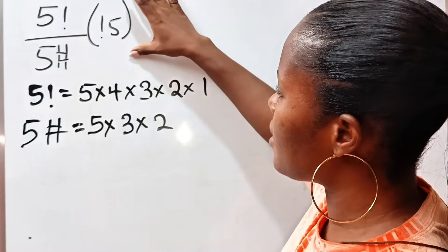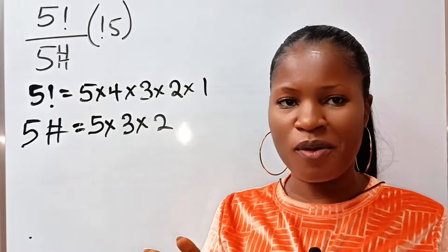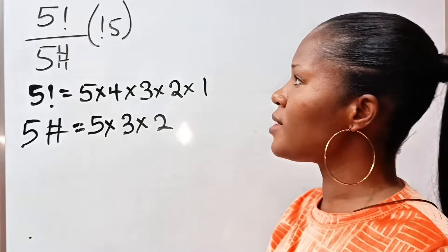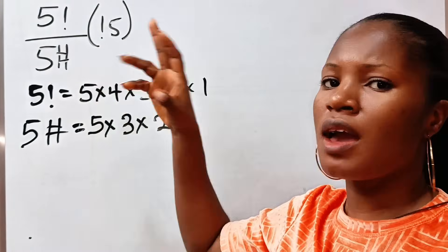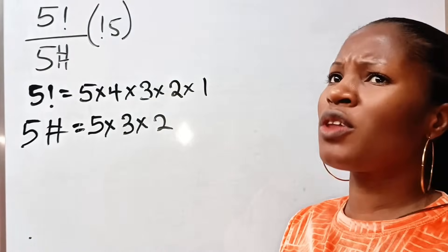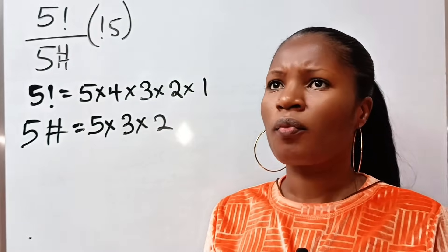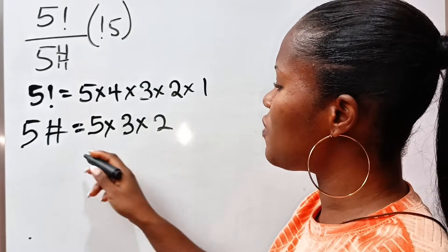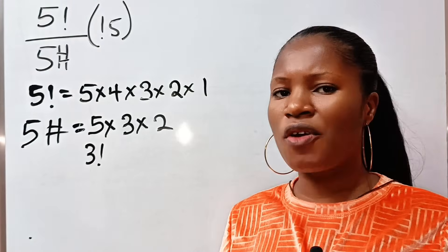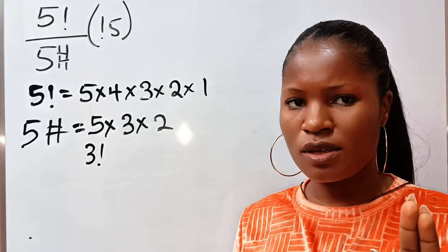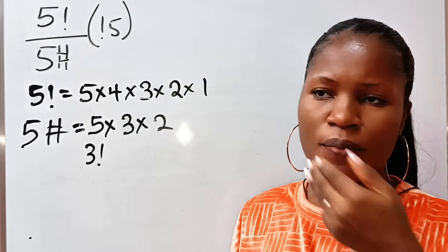Now let us look at this next symbol — this is a sub-factorial. Now, what does that mean? First of all, let's discuss factorial. A factorial simply means, for example, 3 factorial means how many ways we can arrange 3 items on a straight line.